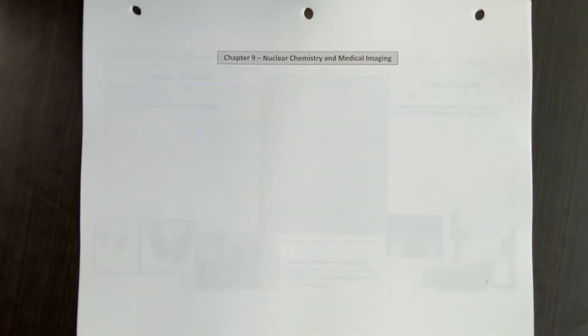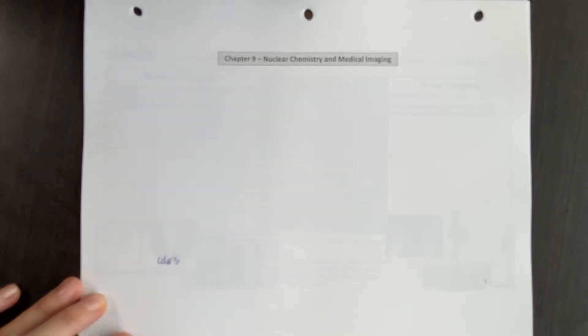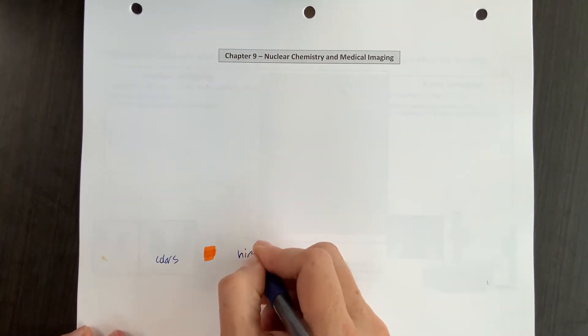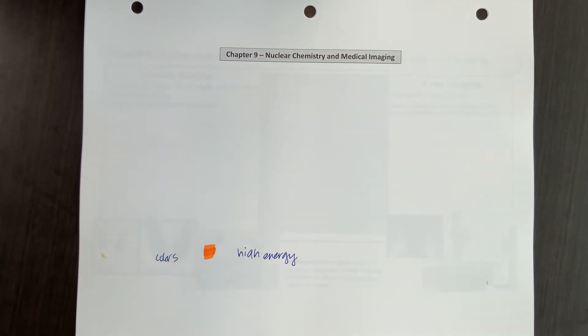So I'm going to start by just writing a couple of color references down here at the bottom for you, things we've used before, but we'll see these throughout the chapter. So we will continue to use orange to say that we've got high energy, and that's going to be enough energy to strip electrons off of atoms.